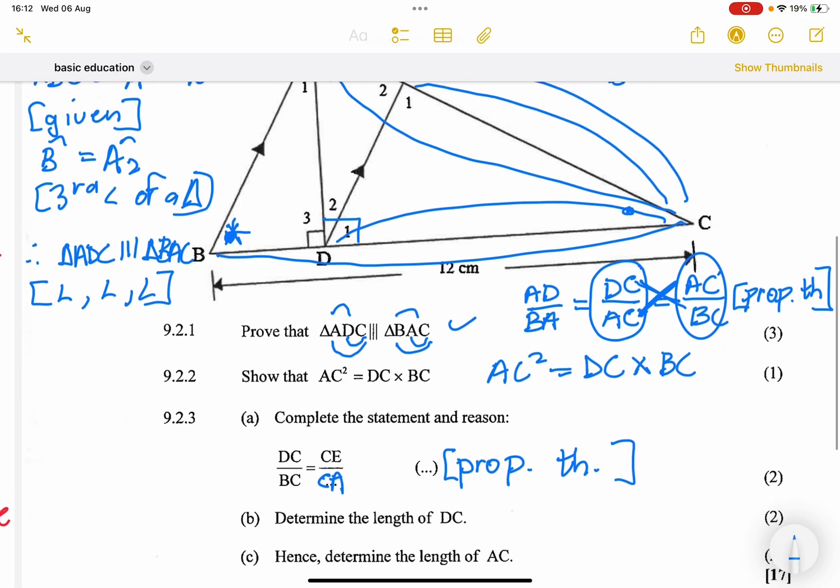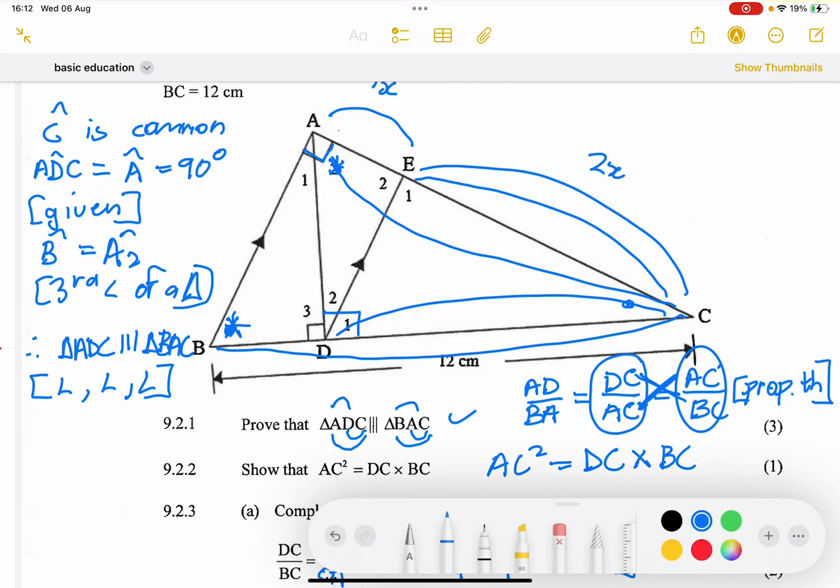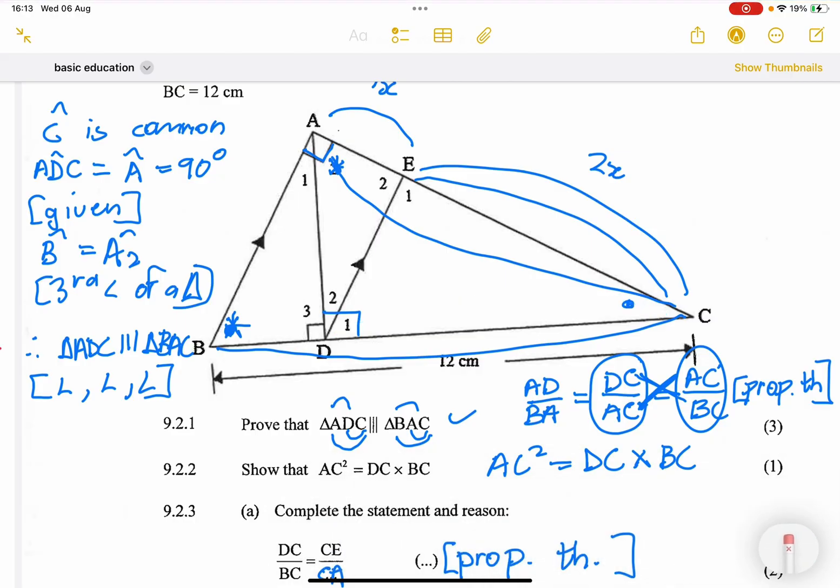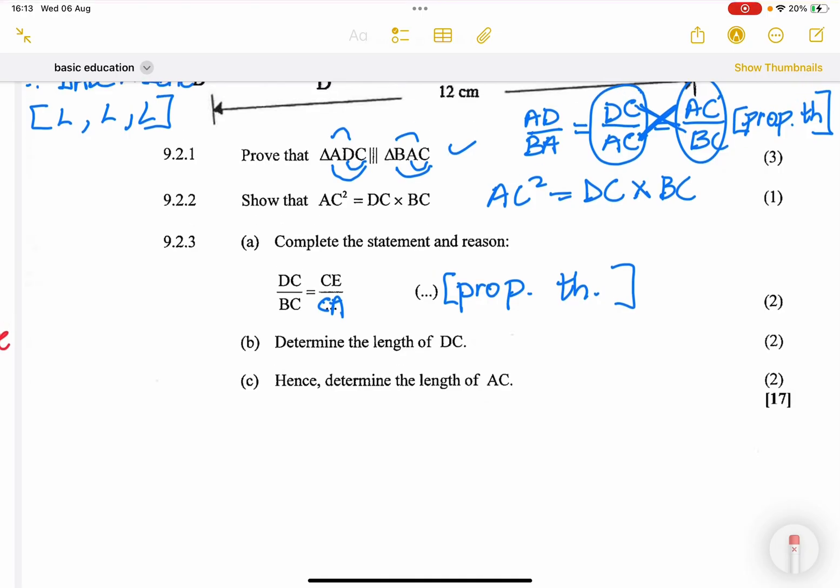And the reason for that is the proportionality theorem. And note, you could have said that there is a line that is parallel to the third side of a triangle. Ladies and gents, I hope that is clearly understood. Okay, and we are going to go into the next one.